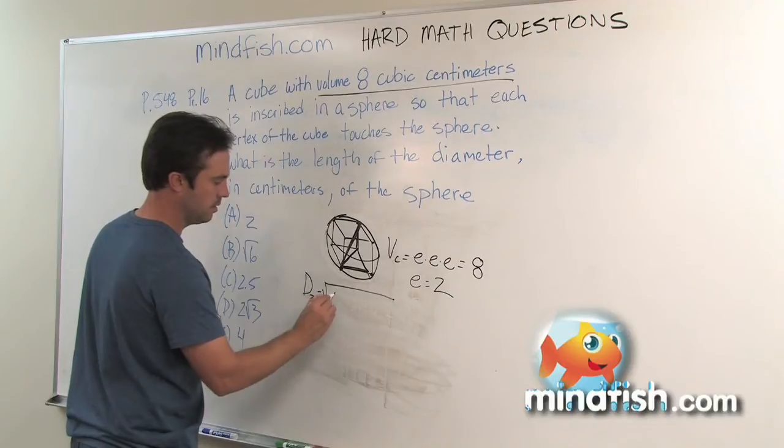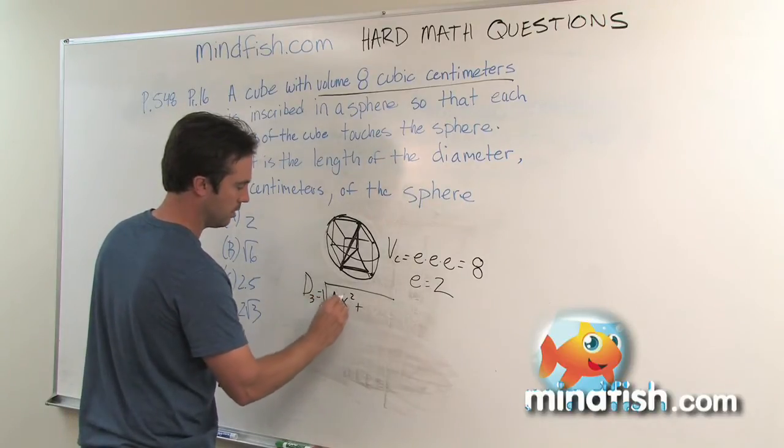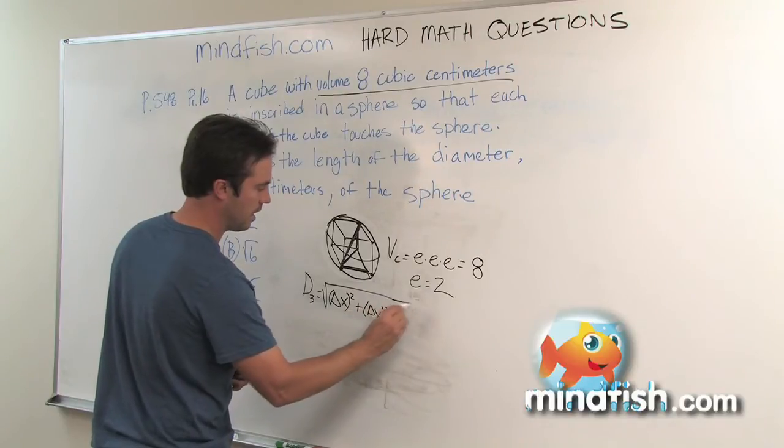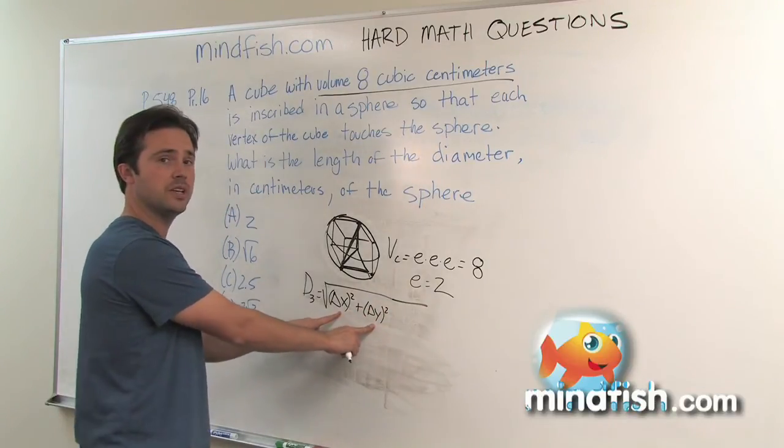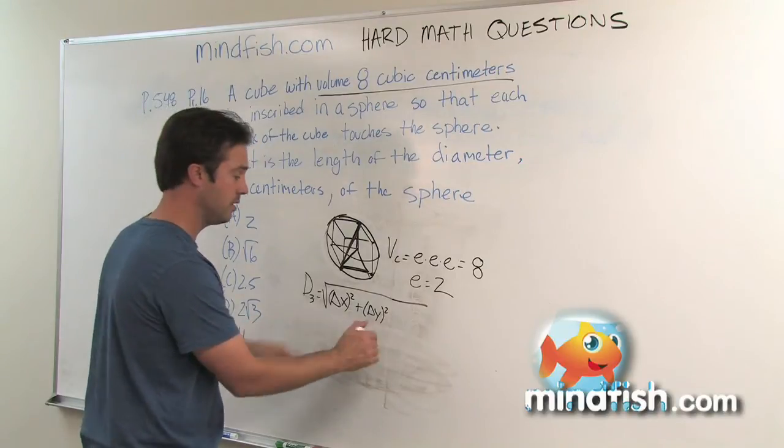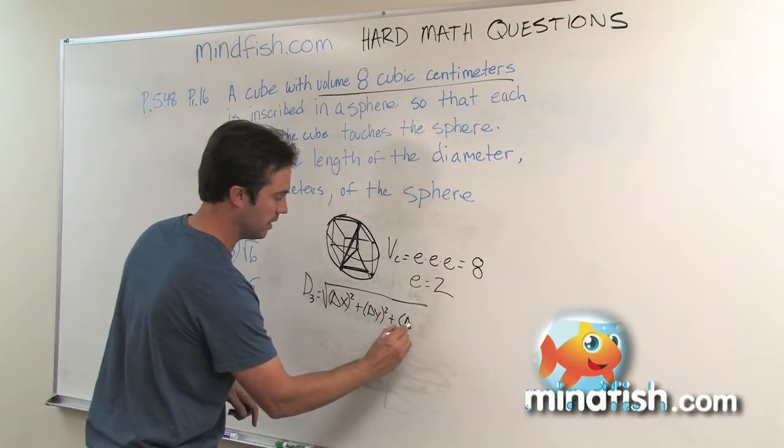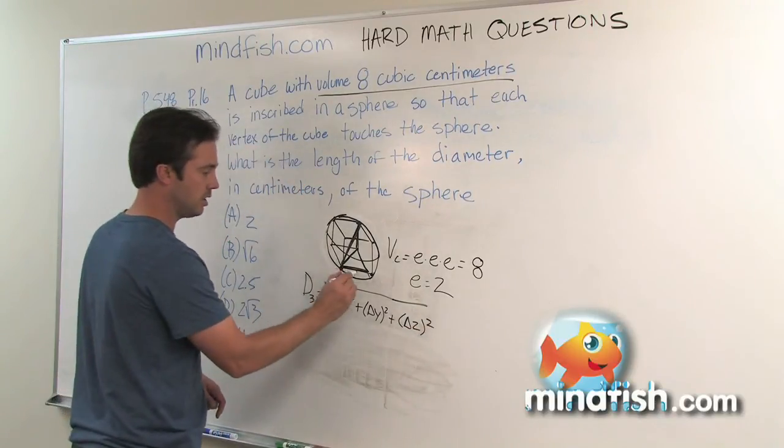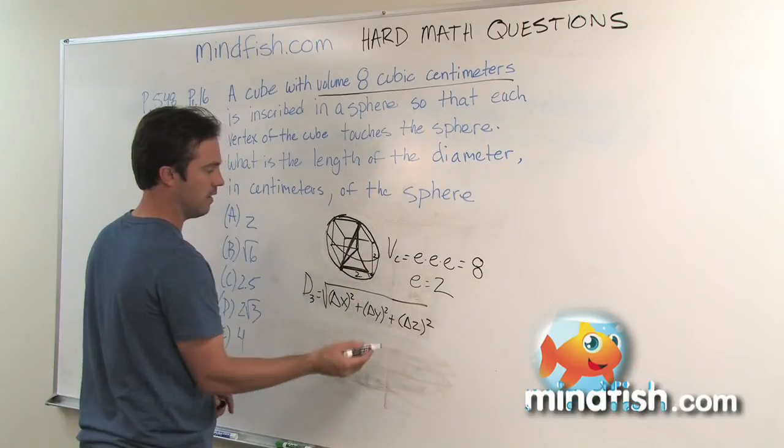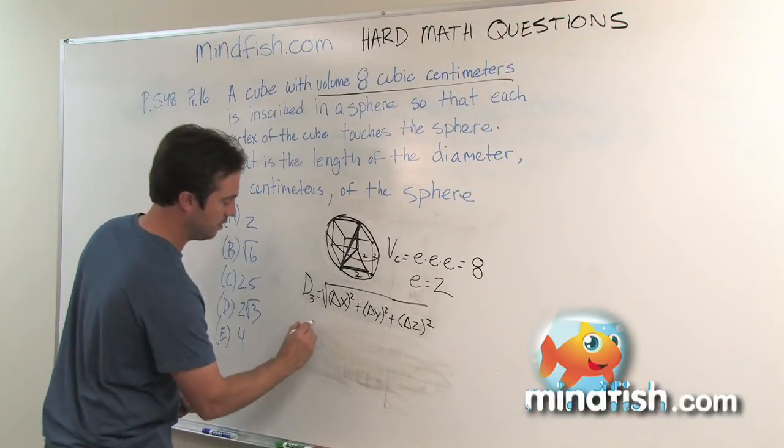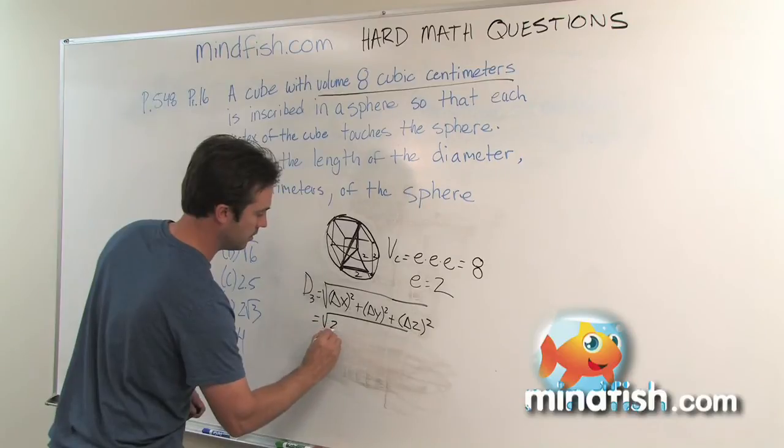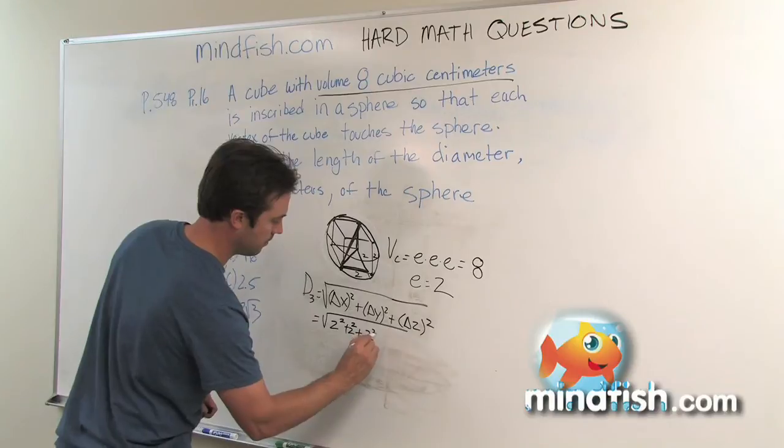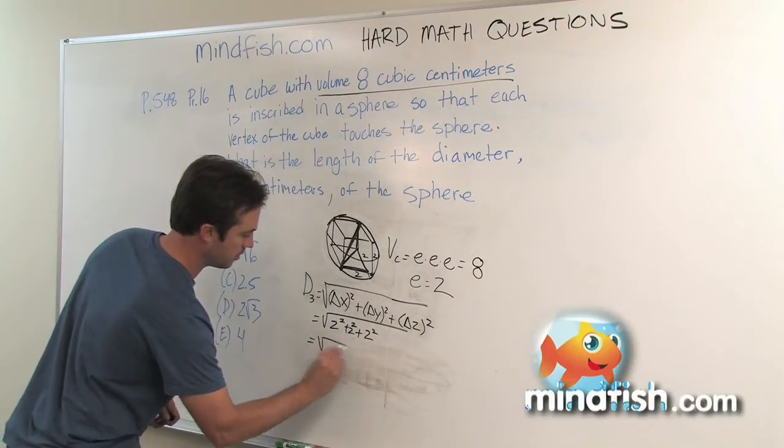What I'm going to do here is say that the diagonal, which is really a three-dimensional distance, is going to be the square root of the change in x squared plus the change in y squared. Notice that's just two-dimensional distance formula - that's what you'd use any time you're getting the distance between two points on a coordinate geometry plane. But now since we're dealing in space, we just add our z distance.